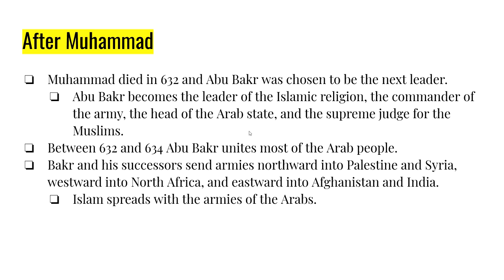What happens after Muhammad? After Muhammad passes away in 632, he named Abu Bakr — his closest friend — to be his successor. Abu Bakr becomes the first imam or caliph, which basically means deputy of the prophet. Abu Bakr becomes a spiritual leader, commands the physical army that Muhammad had, heads the growing Arab state, and serves as the supreme judge for the Muslims. He rules for about two years, during which he imposes unity on most of the Arab people and forces them to follow the religion of Muhammad.